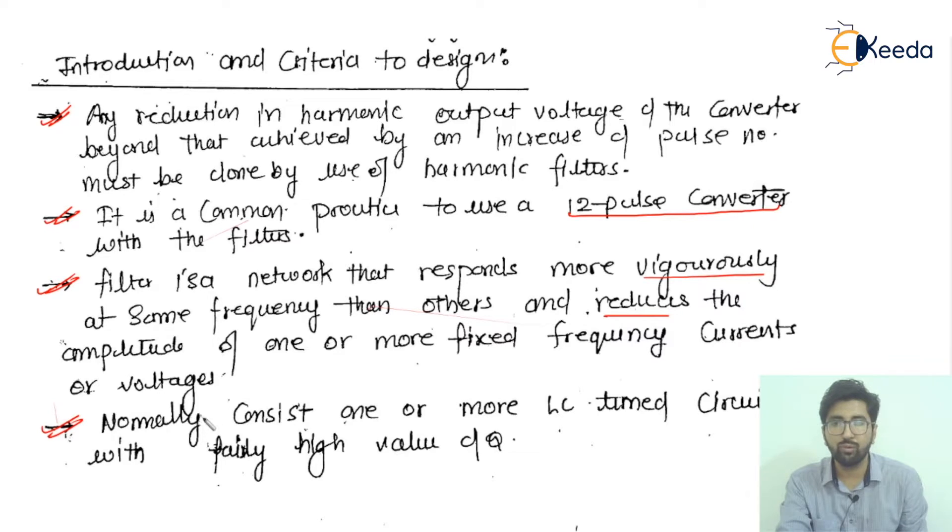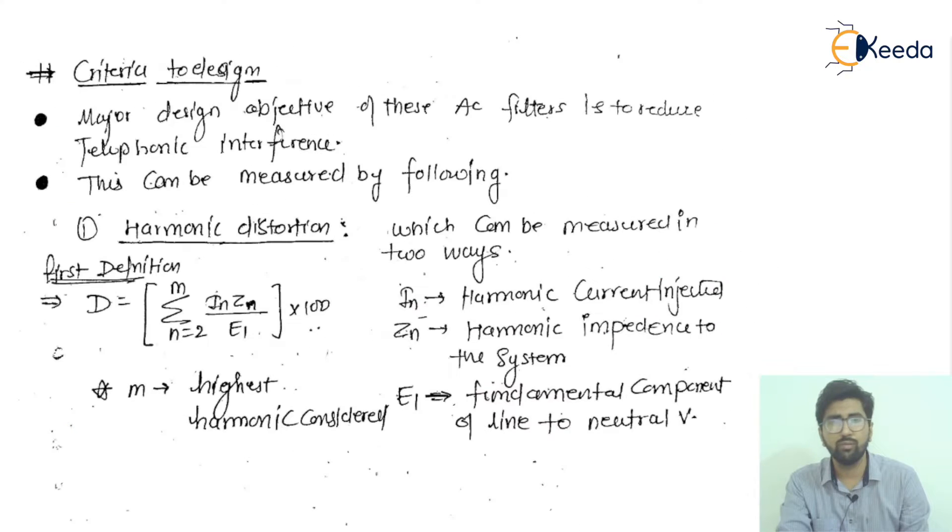Normally, filters consist of one or more LC tuned circuits with a fairly high value of Q. They may also have high-pass filters. These are some variations we will study in further lectures. Generally, LC tuned circuits are used with inductors and capacitors. The quality factor Q should be high, approximately around 40, 50, or 60.